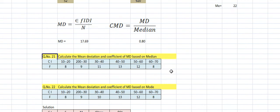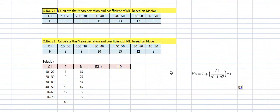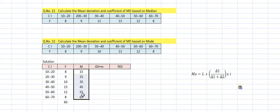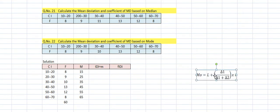If you have doubts, call me. Now question number 22: calculate the mean deviation and coefficient of mean deviation based on mode. Class intervals are 10–20 up to 60–70, frequencies are 8, 9, 10, 13, 12, 8, total = 60. Midpoints start at 15 with class width 10. The mode formula will be applied.